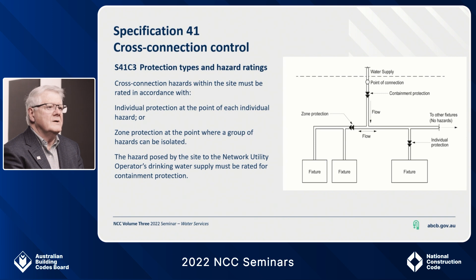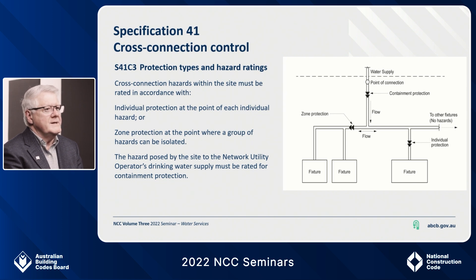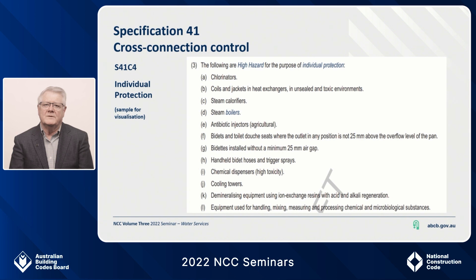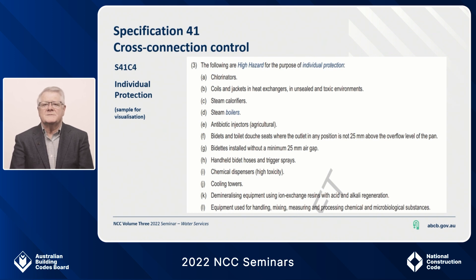In Specification 41 in NCC 2022 we identify some of the more known hazards into protection types: individual, zone and containment. The diagram on the slide clearly identifies how these types relate to an installation. It is important to note that in some jurisdictions, regulations issued under the water supply legislation and/or rules set out by the network utility operator may prescribe containment protection which differs from this specification. Specification 41 contains over 60 separate installations across low, medium and high hazard ratings, each with the hazard rating and protection requirements shown. This is a DTS provision so it needs to be followed.